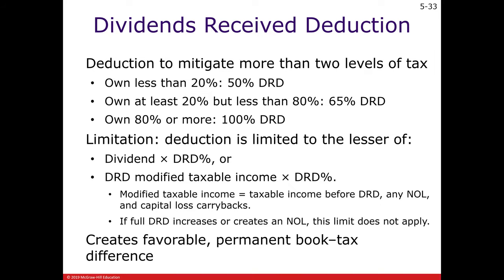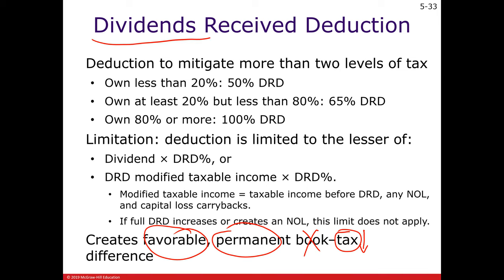This is part three of our chapter five video lecture where we're going to cover one more book-to-tax difference that is permanent — recorded on the tax return but not on the income statement — and it's favorable because it's a deduction subtracted on the tax return, reducing the amount of tax liability. That book-to-tax difference is for dividends, and you're going to be claiming a deduction for those dividends.